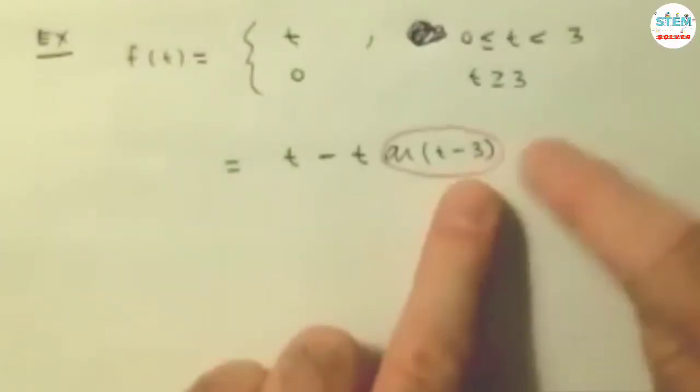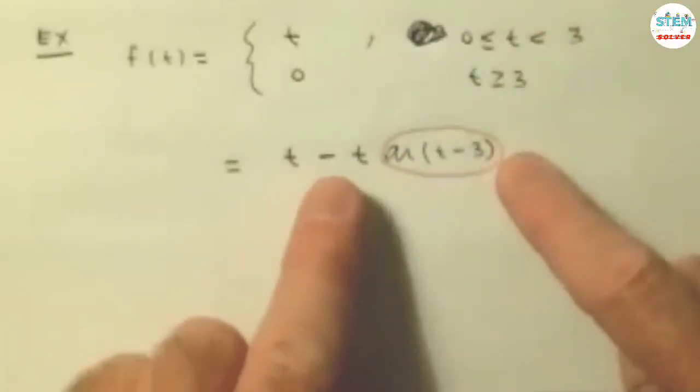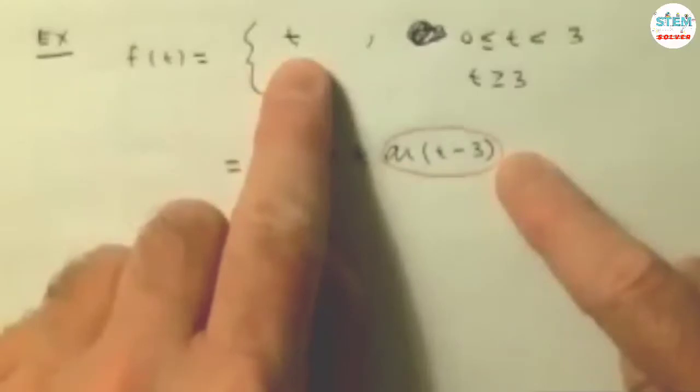Let's take a look at why this works. I'm going to focus on the 3. Between 0 and 3, this whole thing I'm circling in orange is 0. So between 0 and 3, I have t minus t times 0, which is t, which is what I have here. That's what we want.